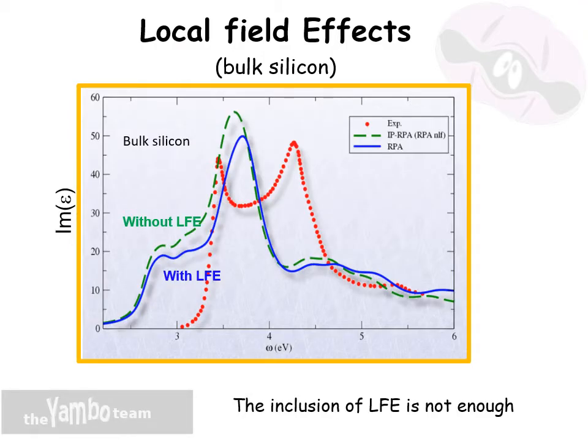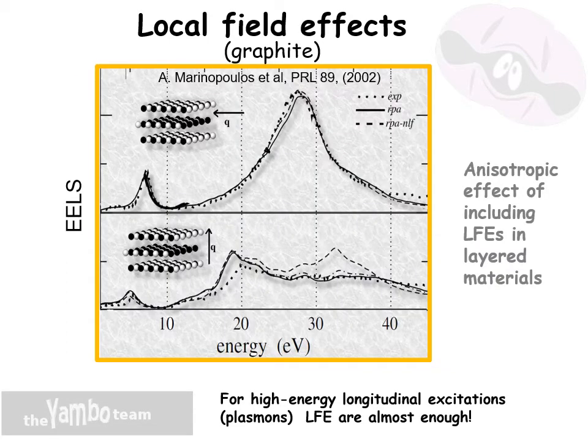If you include the local field effects in such a way, you discover that they produce a small blue shift and a reduction of the intensity, but are not able to recover good agreement with experiment if you compare the imaginary part of the dielectric function of a bulk material like silicon with the experimental data.